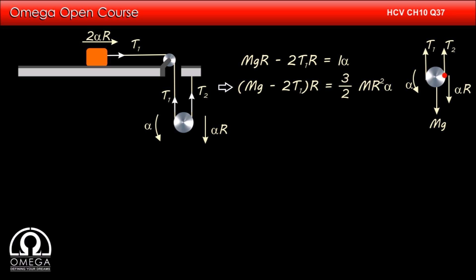Putting the value, we get capital Mg minus 2T1r is equal to 3 by 2 capital MR square alpha or capital Mg minus 2T1 is equal to 3 by 2 capital MR alpha.